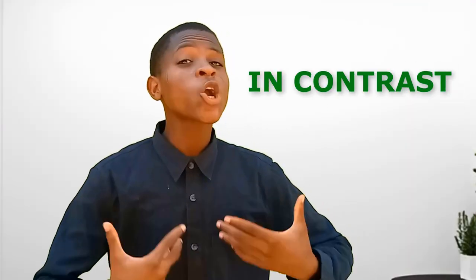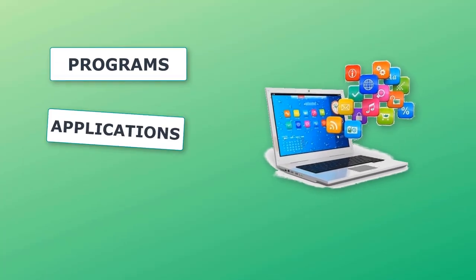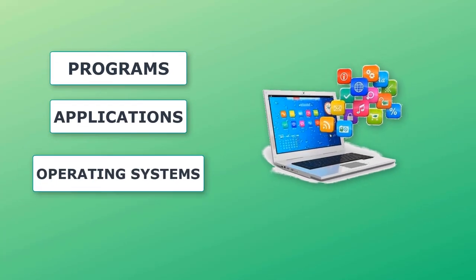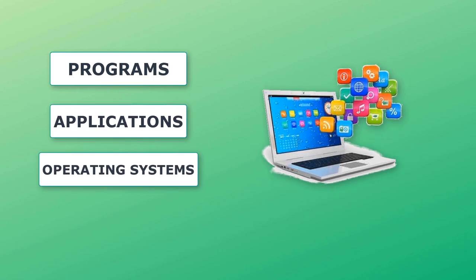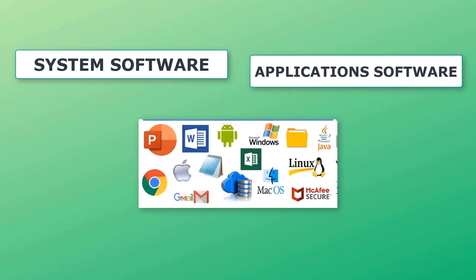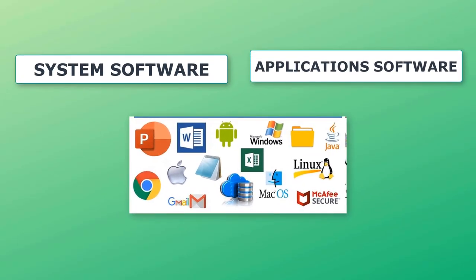Software, in contrast to hardware, refers to the intangible instructions or data that enable computers to perform specific tasks. It encompasses all the programs, applications, and operating systems that run on hardware. Software can be categorized into two main types: system software and application software.